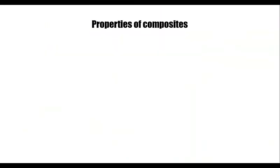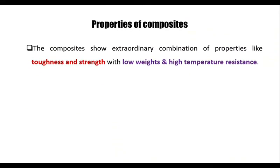Coming to the properties of composites, the composites show extraordinary combination of properties like toughness and strength with low weights and high temperature resistance. Toughness means the ability of a material to resist breaking when force is applied. Strength is how much force needs to be applied before the material deforms.